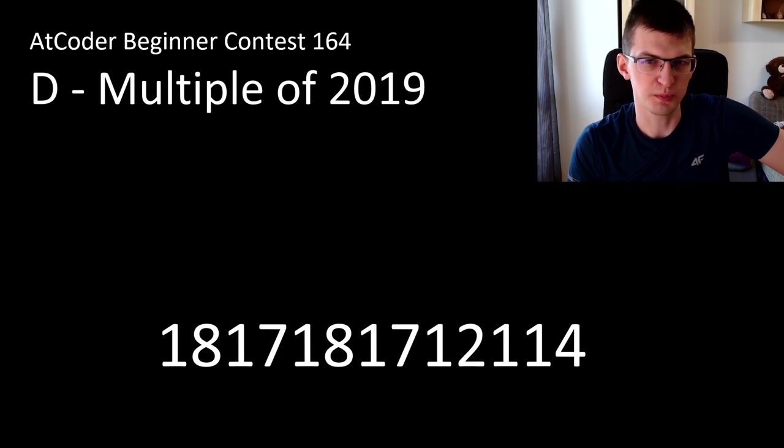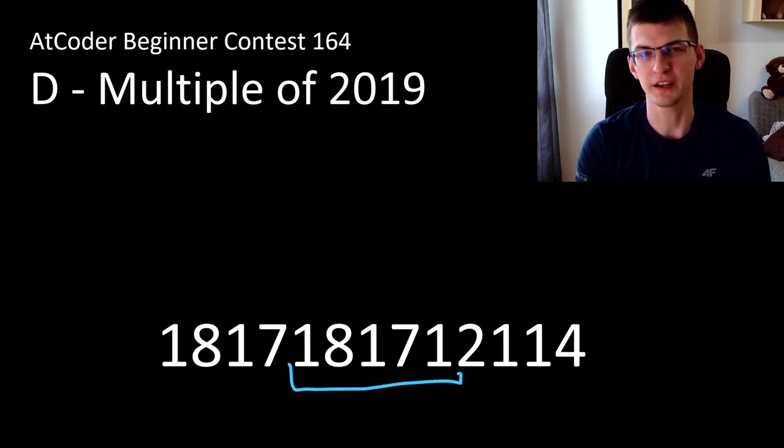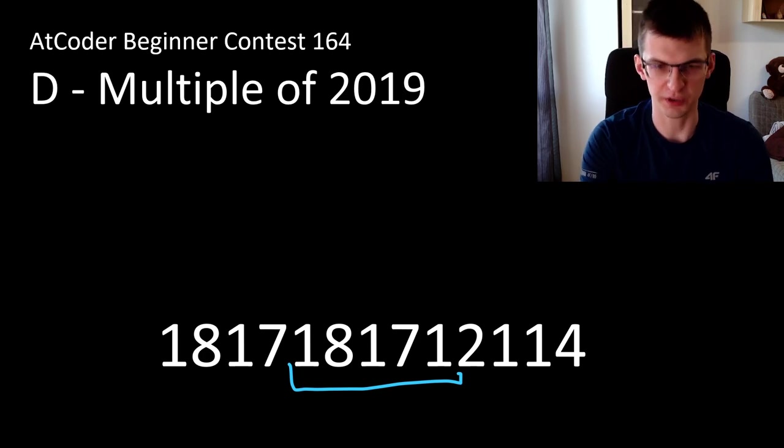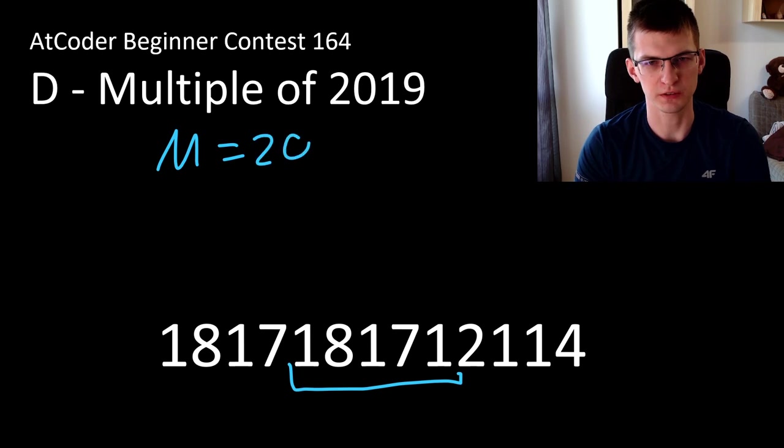This is Multiple of 2019, where we are given a long string with digits and we need to count such subarrays that are divisible by 2019. This number 18171 is divisible by, let's call it M, M equals that.